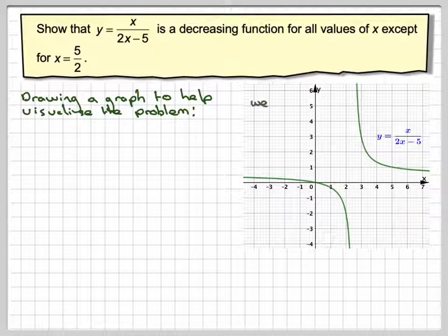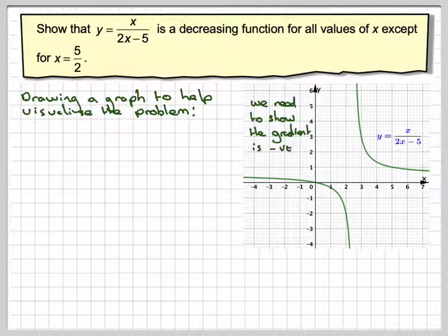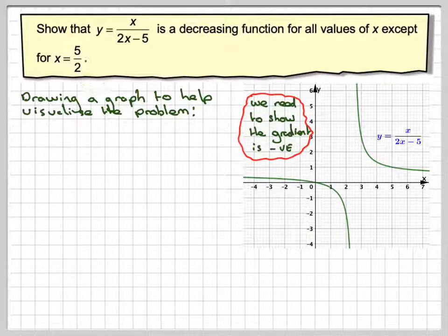So what we've got to do is to show that the gradient is negative for every single value of x except 5 over 2 where the graph isn't defined because that's a vertical asymptote.